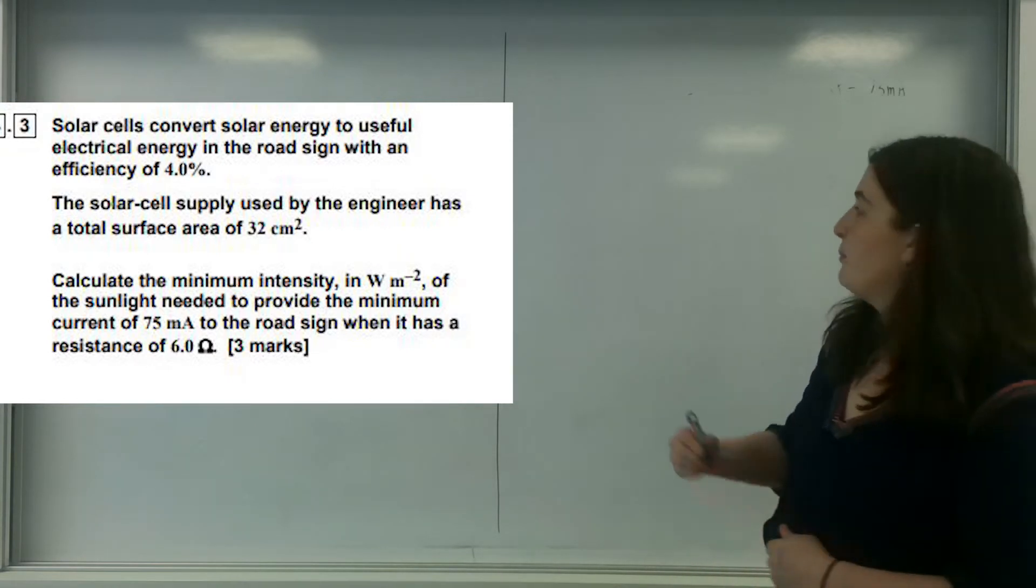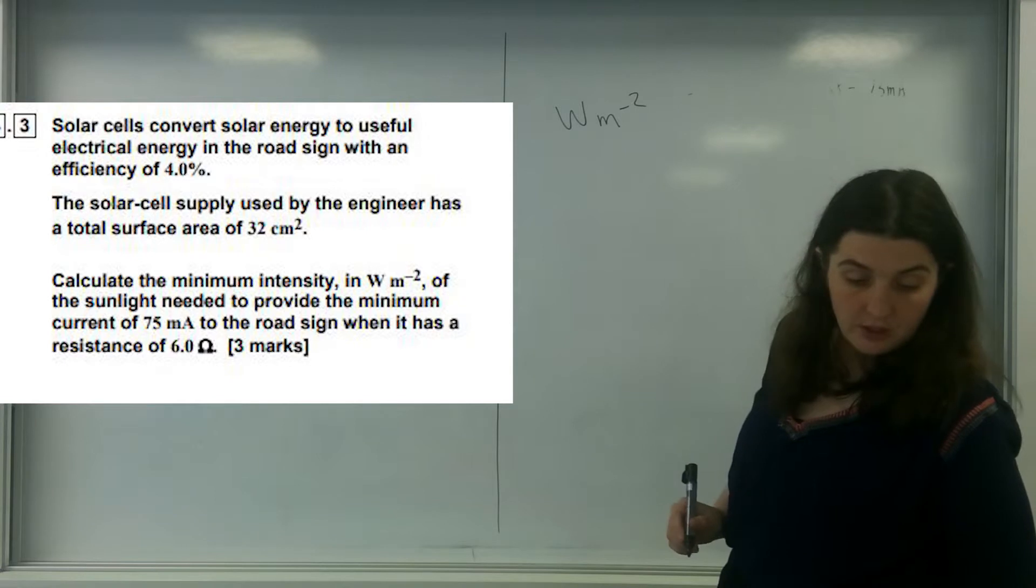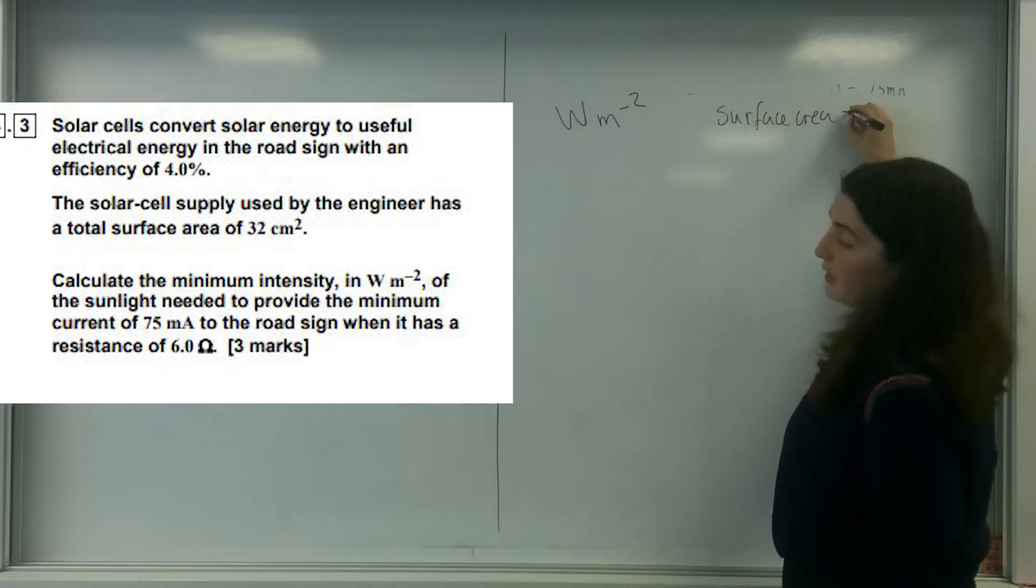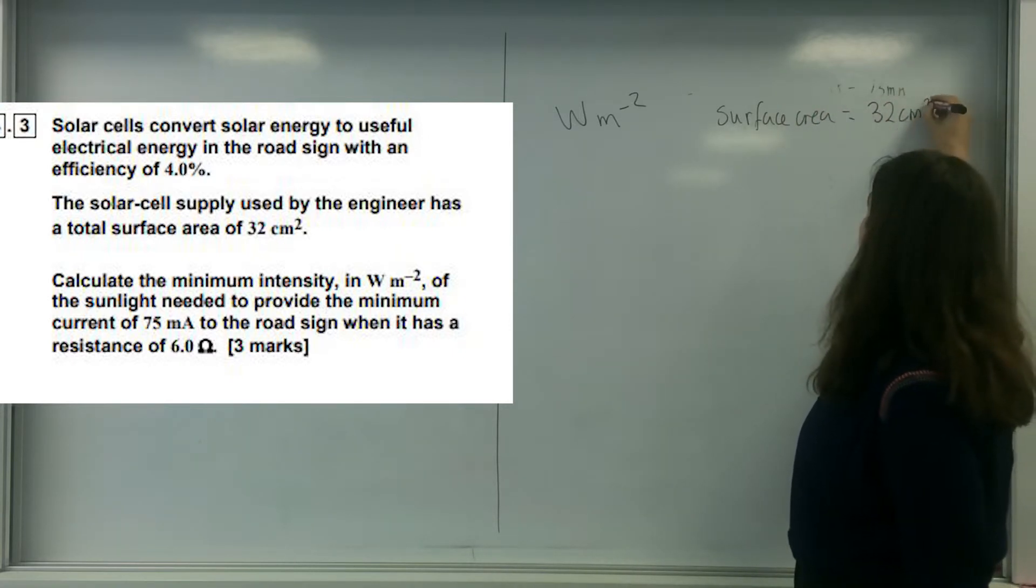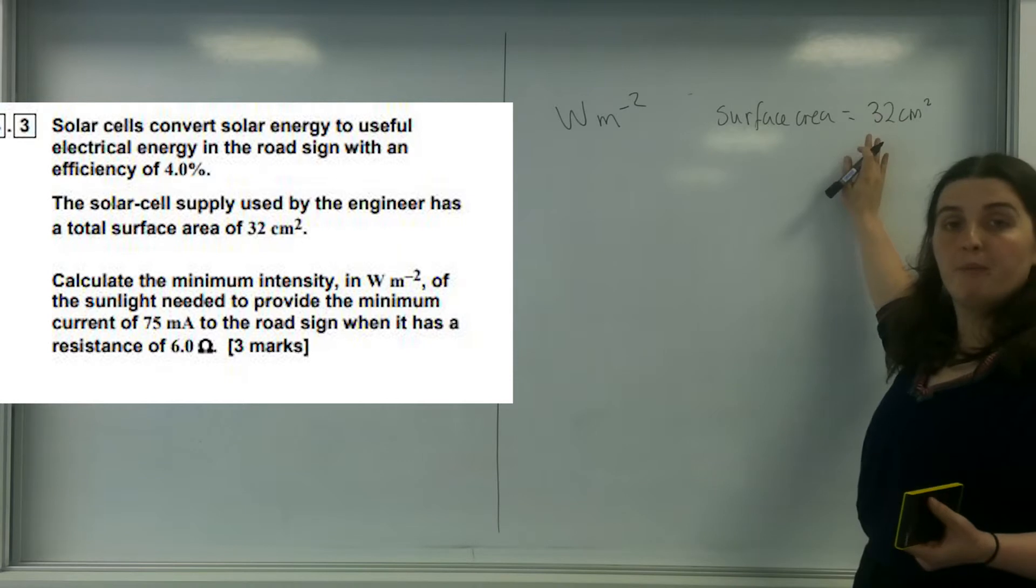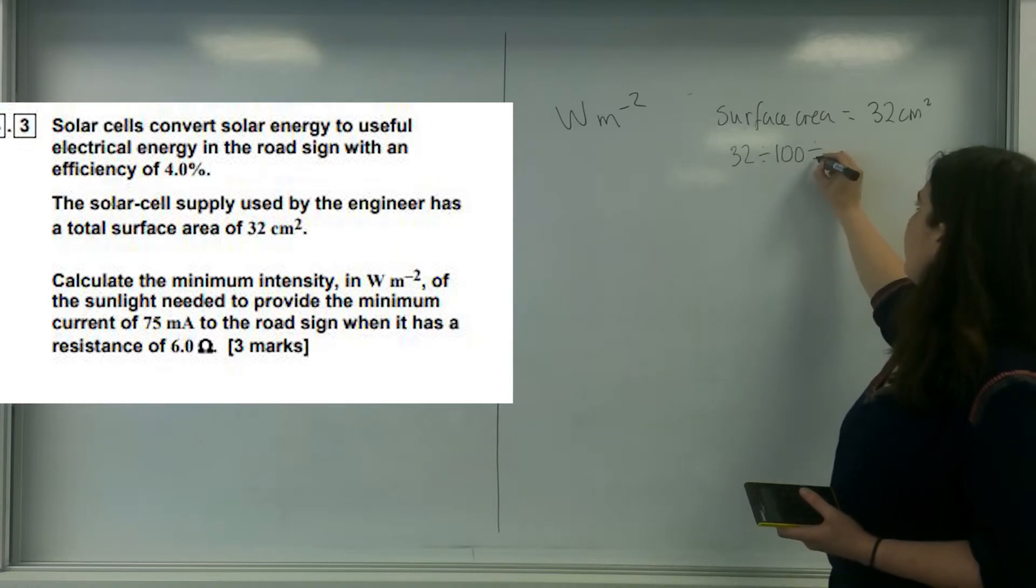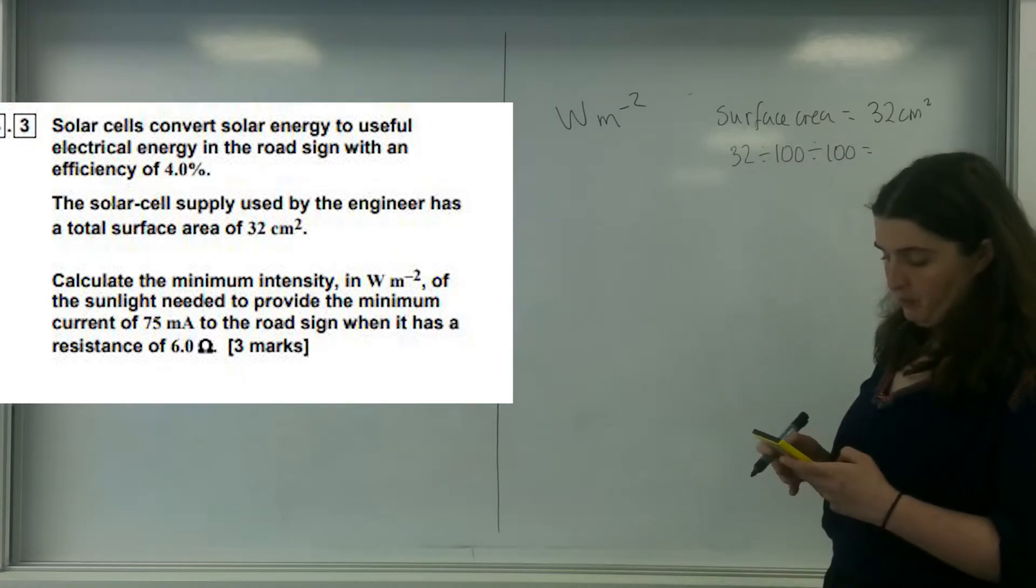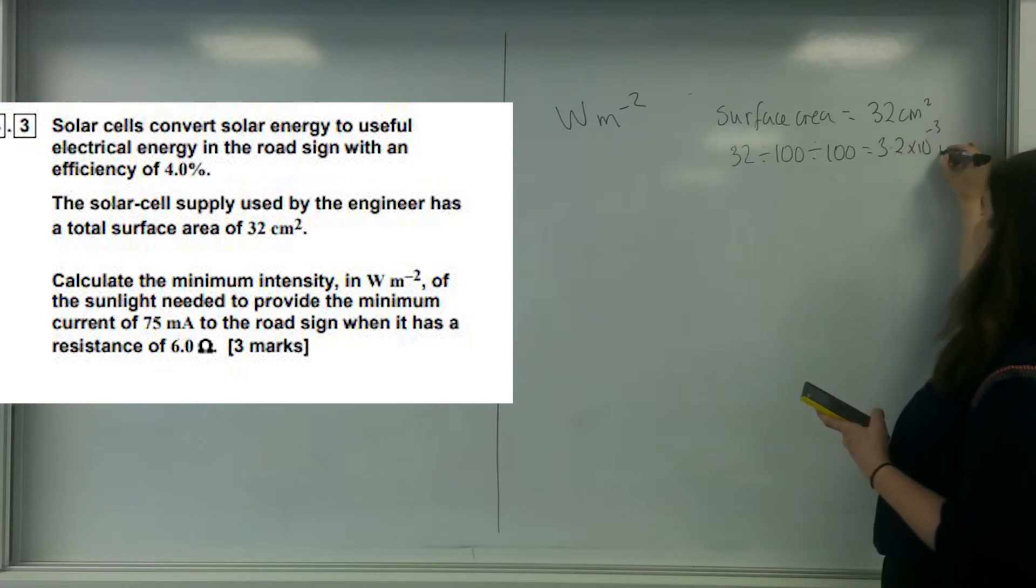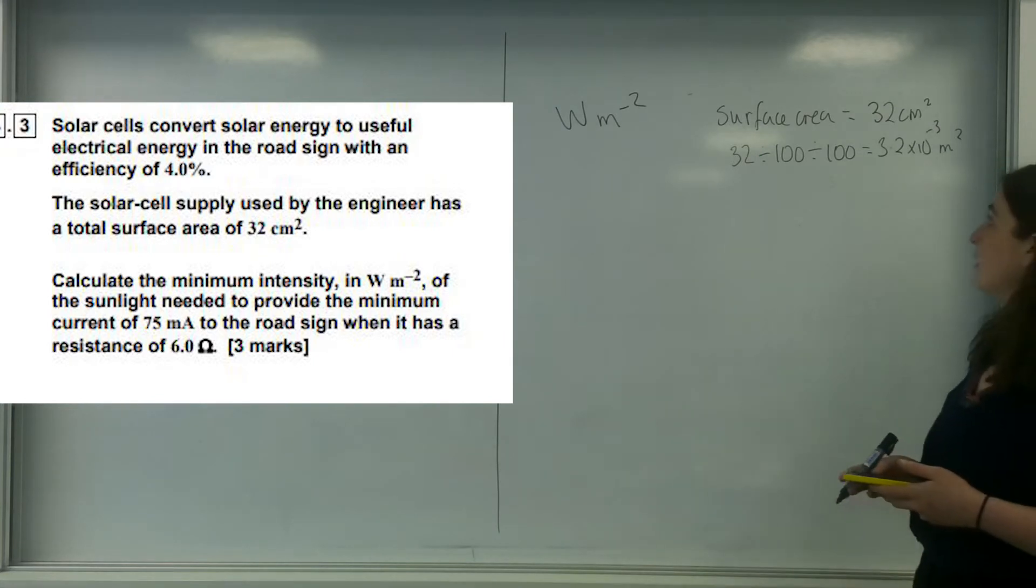I want something in watts per meters squared. I have been told that the solar cell has a surface area of 32 centimeters squared. The first thing I'm going to do is convert that into meters squared. I'm going to divide it by 100, and I'm going to do that twice. 32 divided by 100, divided by 100 again, would be 3.2 times 10 to the minus 3 meters squared.